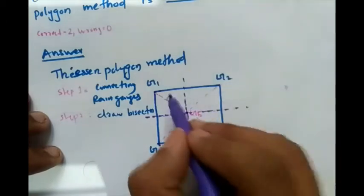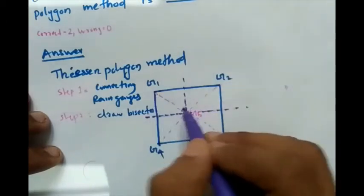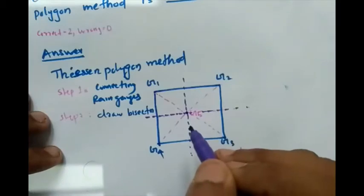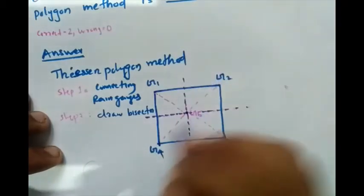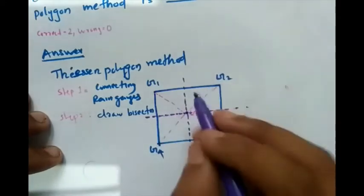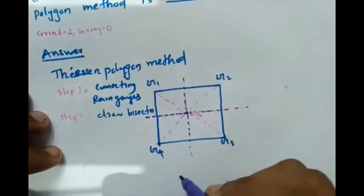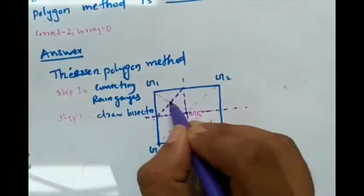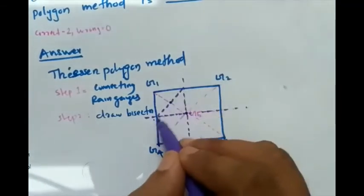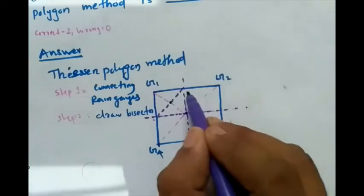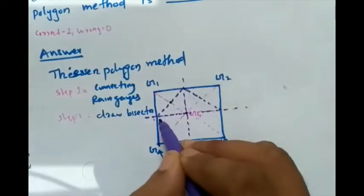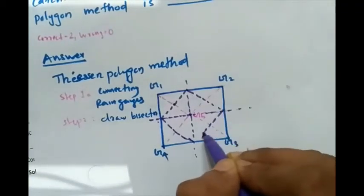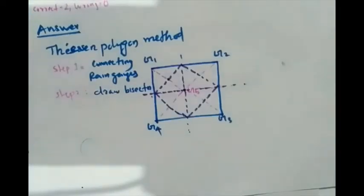Now we draw the bisector for G1-G5 — this is the tricky part of the question. For a simple square shape you can do it easily, but for a complicated shape it cannot be done within minutes. The bisectors for G1-G5, G2-G5, and G4-G5 are drawn accordingly.